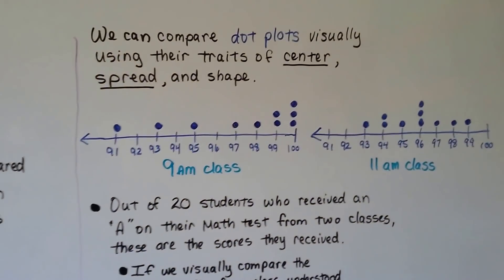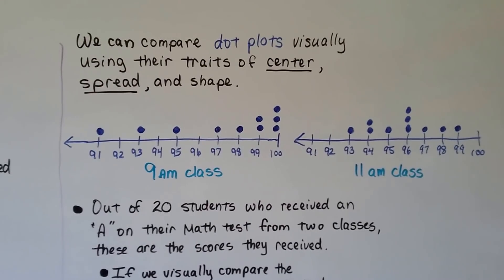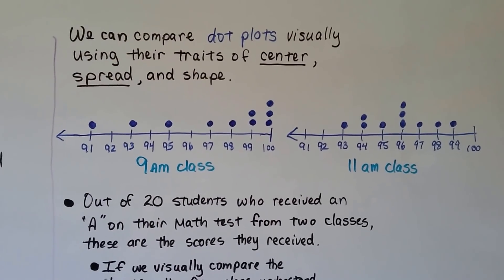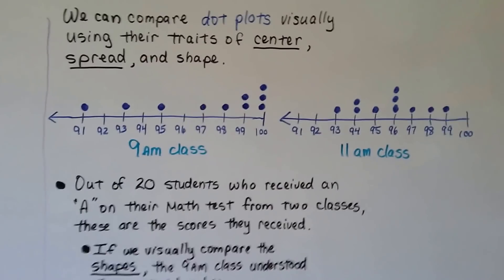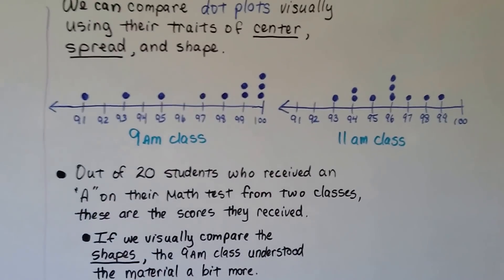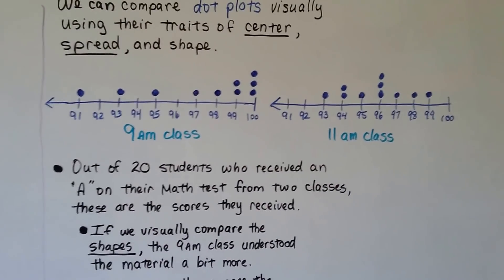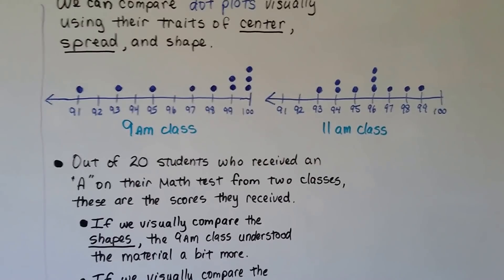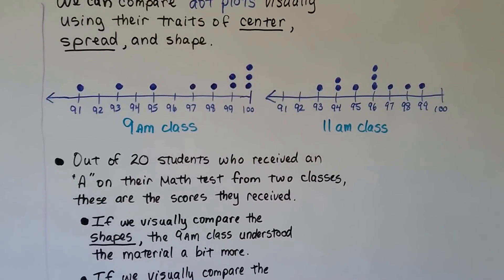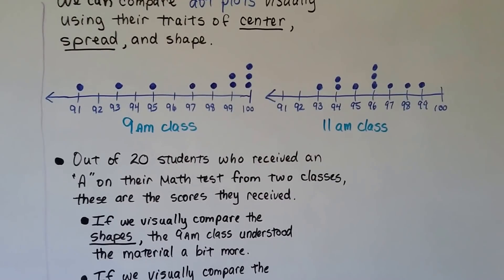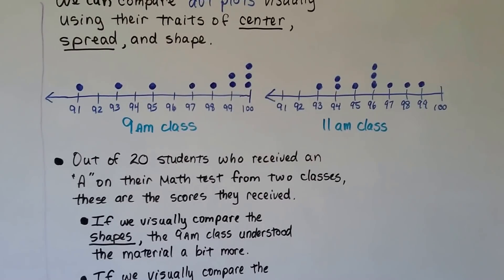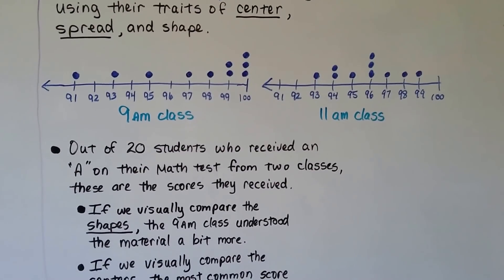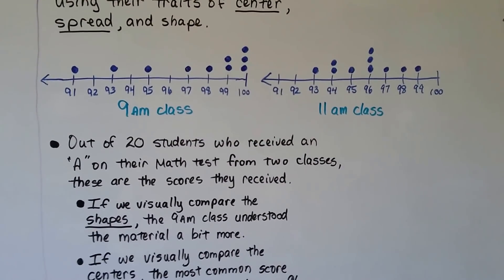We can compare dot plots visually using their traits of center, spread, and shape. Here we have two of them: a 9 a.m. class and an 11 a.m. class. Out of 20 students who received an A on their math test from two classes, these are the scores they received.